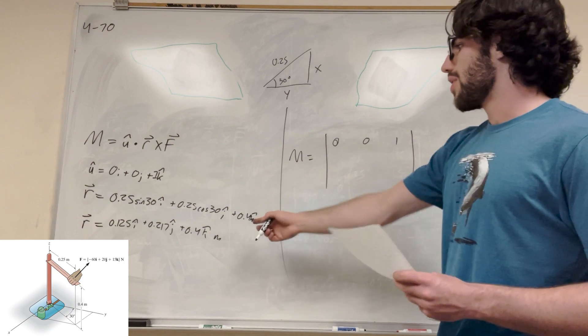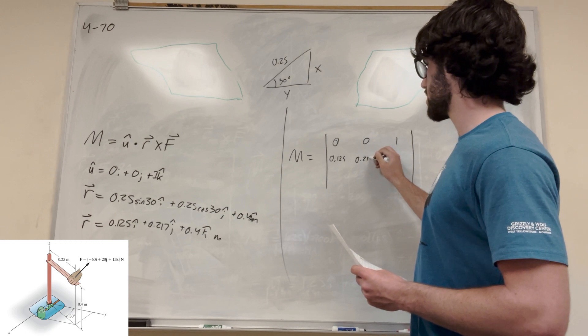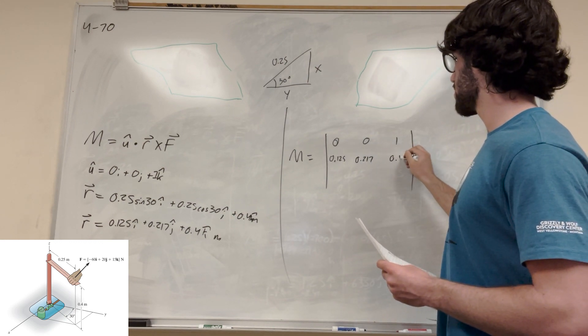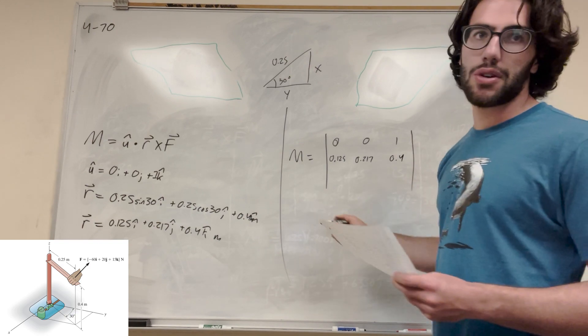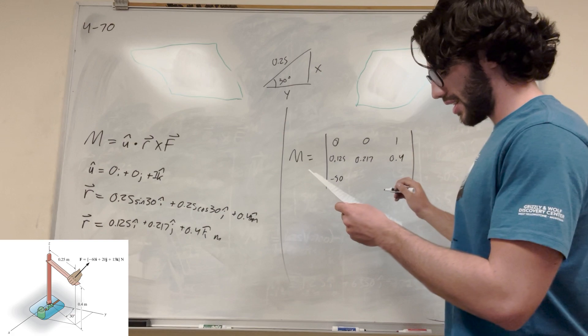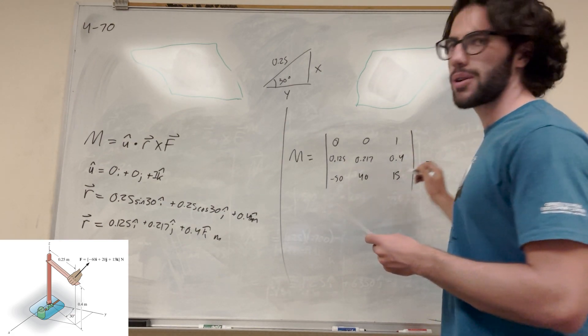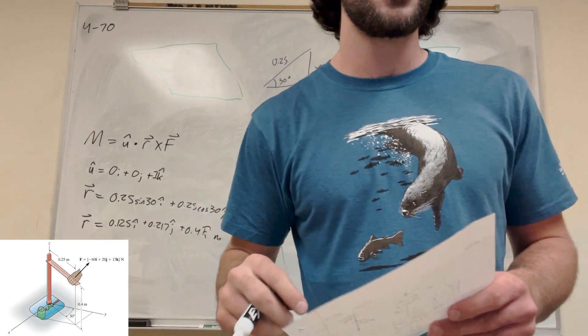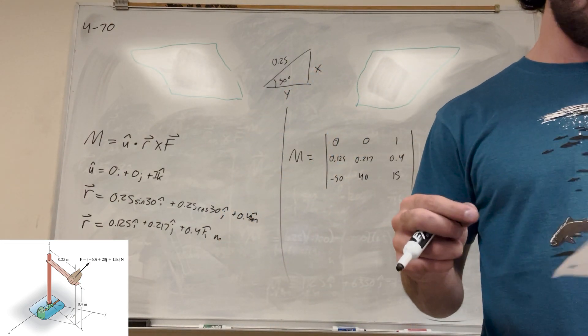So we found r, 0.125, 0.217, 0.4, and then what, force? So this force is given to us. So negative 50, negative 50, 40, and 15. Are we looking for magnitude? What are we looking for? Determine the component of the moment created on the z-axis.